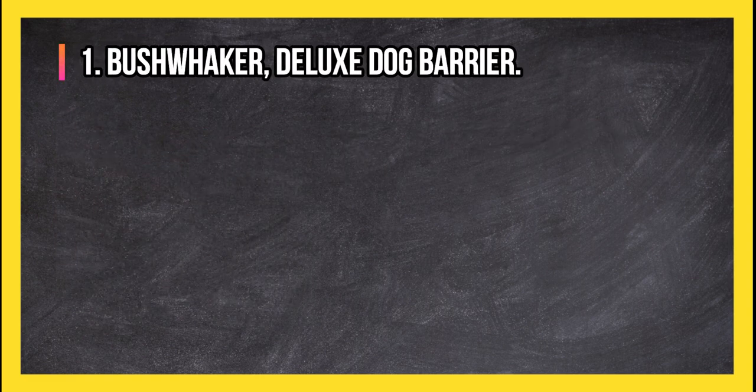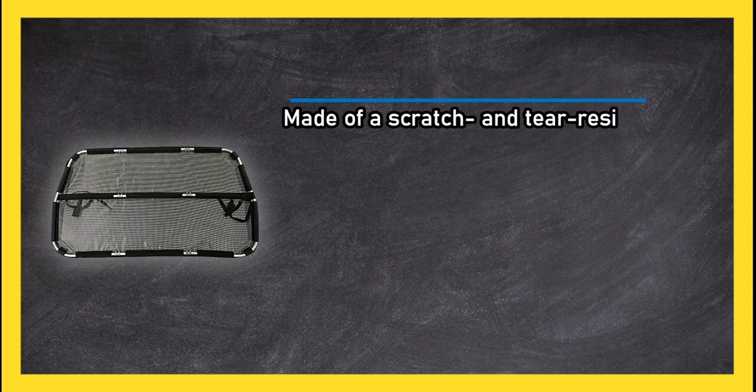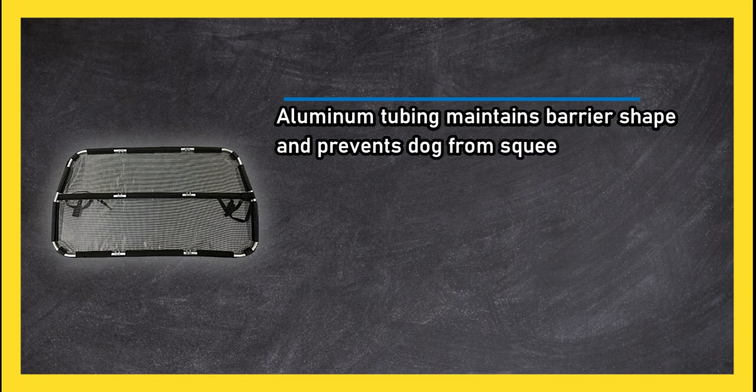At number one, Bushwhacker Deluxe Dog Barrier. Made of a scratch and tear resistant material. Mesh design allows air from the AC or heater to flow through the barrier. Aluminum tubing maintains barrier shape and prevents dog from squeezing over or under.